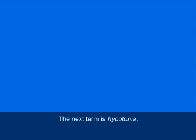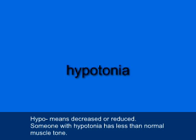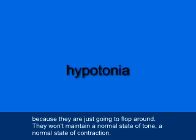The next term is hypotonia, H-Y-P-O-T-O-N-I-A. Hypo means decreased or reduced. Someone with hypotonia has less than normal muscle tone. They're going to tend to be floppy — not be able to hold muscles in certain positions because they'll just flop around. They won't maintain a normal state of tone or contraction.